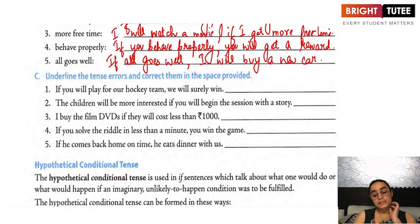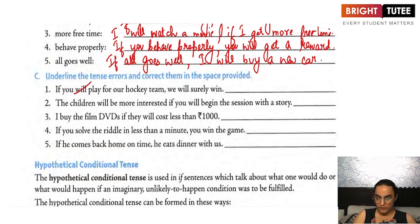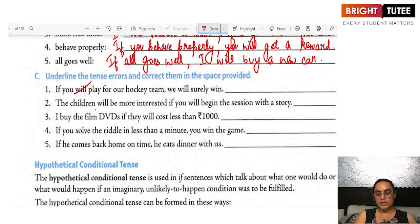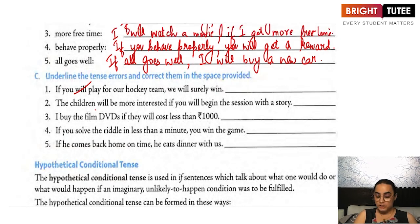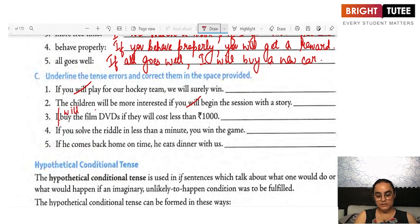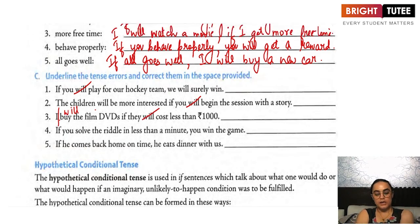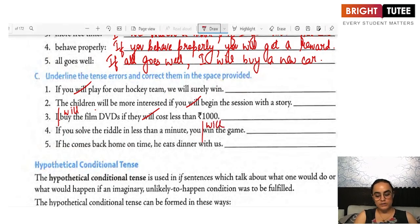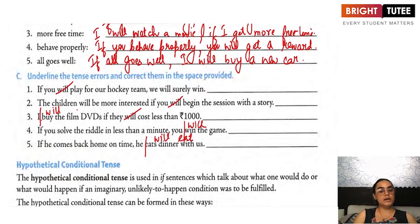It was easy to frame sentences for the present conditional. Next, underline the tense errors and correct them. 'If you will play for our hockey team, we will surely win' — corrected: if you play for our hockey team, we will surely win. 'If you will begin the session with a story' — corrected: if you begin the session with a story, the children will be more interested. 'I buy the film DVDs if they will cost less than 1,000' — corrected: I will buy film DVDs if they cost less than 1,000.